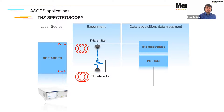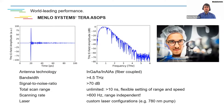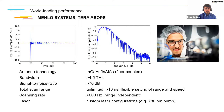Last but not least, terahertz spectroscopy works very well with the ASOPS engine — either the scientific or compact system. The pump-probe experiment uses terahertz emission and detection with photoconductive antennas. We are experts here because we also have time-domain terahertz systems. Typical performance includes bandwidth, what in the terahertz community is called dynamic range, a total scan range of 10 nanoseconds, and scanning rates that are range-independent. Custom laser configurations are available based on the scientific system.